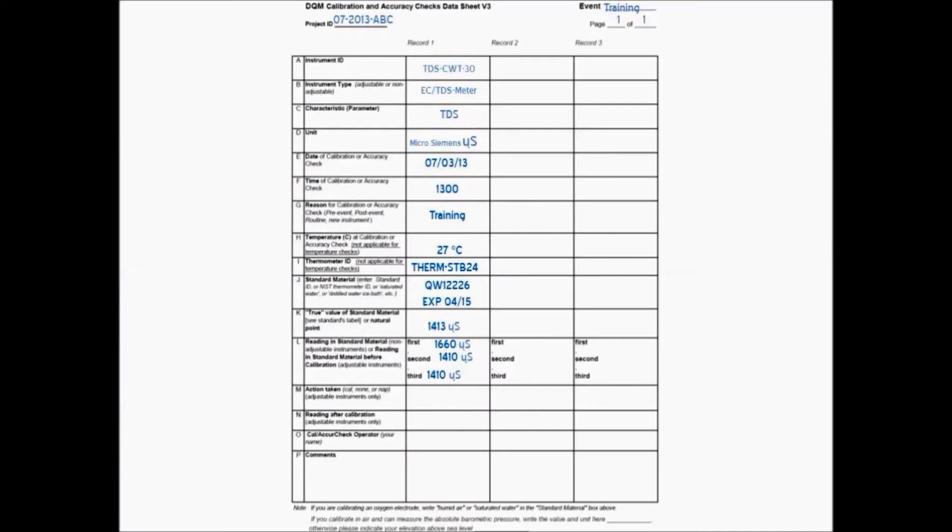In our calibration spreadsheet for action taken, we'll be writing in 'calibrated,' and we record the meter's final reading after calibration. Make sure to record the name of the person who calibrated the meter, and any additional comments.